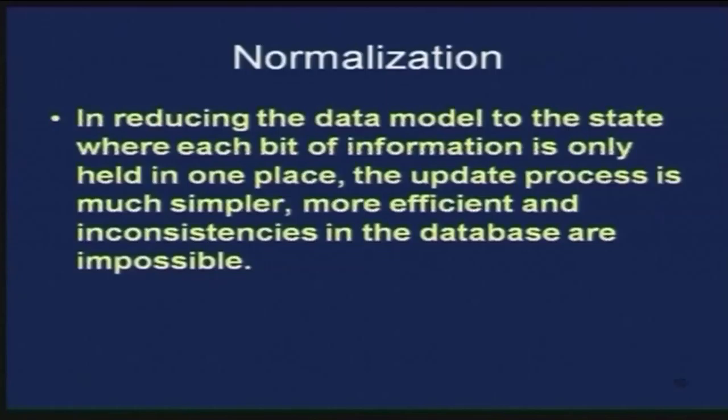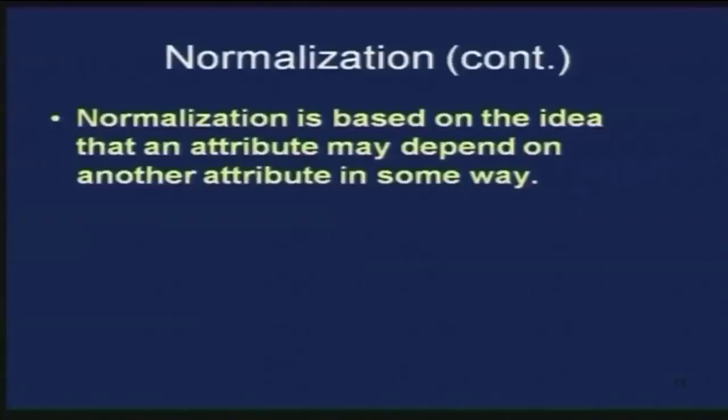By reducing the data model to the state where each bit of information is held in only one place, the update process is much simpler, more efficient, and inconsistencies in the database become impossible. If information is stored in multiple places, you may update it in one place and forget to update it in another, causing inconsistency. Normalization is based on the idea that an attribute may depend on another attribute in some way.